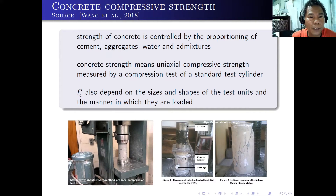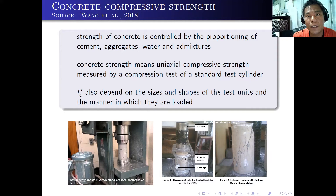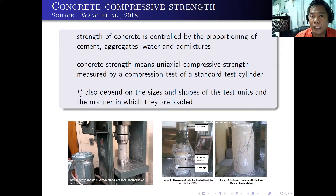The most important property of the concrete is what we call the concrete compressive strength. The strength of concrete is controlled by the proportioning of cement, aggregates, water, and admixtures. The concrete strength means the uniaxial compressive strength measured by compression test on a standard test cylinder. FC' also depends on the sizes and shapes of the test units and the manner in which they are loaded.